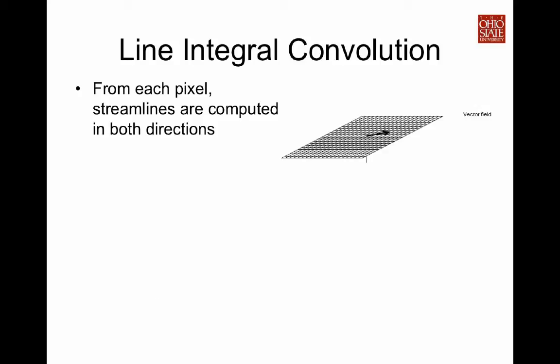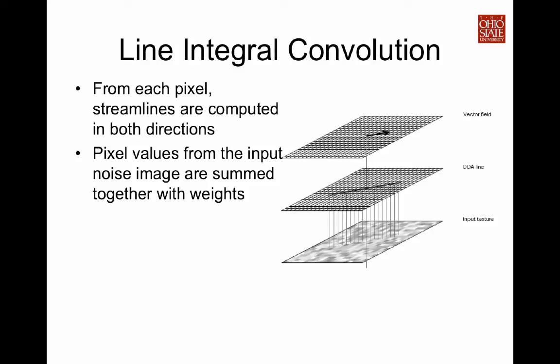Here are the steps we are going to apply to every pixel in the output image. From each pixel, we take the vector field and then we compute forward and backward streamlines. Along the streamline paths, we look at the input noise image and then we perform a weighted sum by multiplying a weight to each of the noise image pixels along the streamline path.